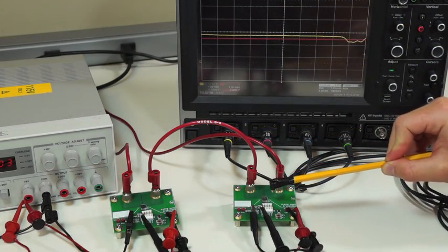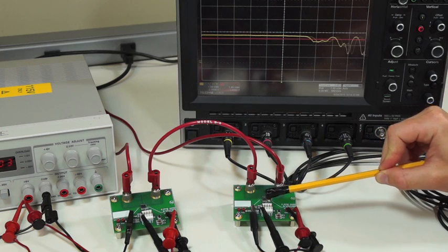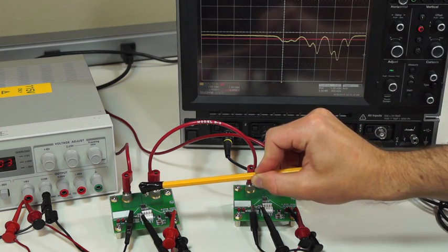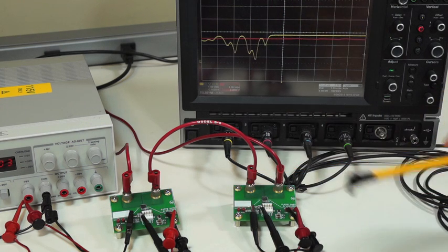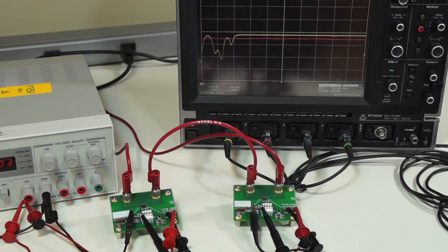You can see that the output of the ACS712 is greatly affected whereas the output of the ACS724 barely moves. This magnet is much stronger than what would be seen in most applications, but it does a good job of showing just how effective differential current sensing technology is.